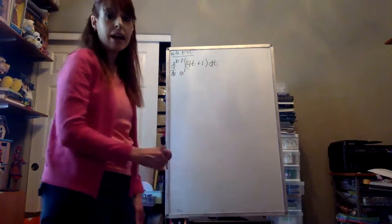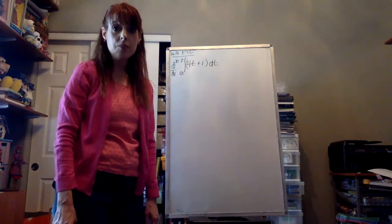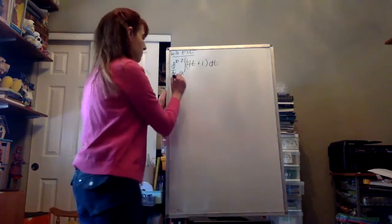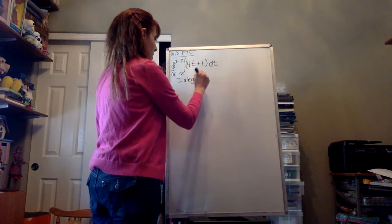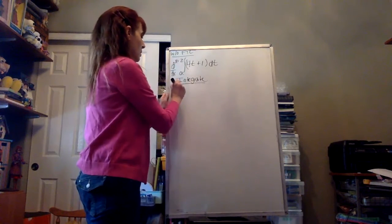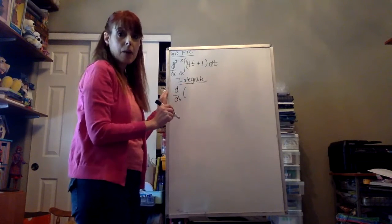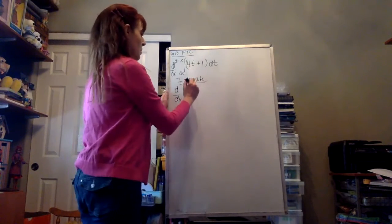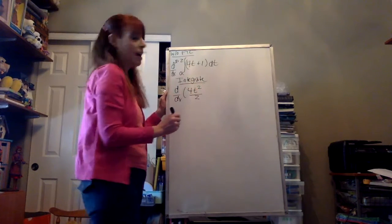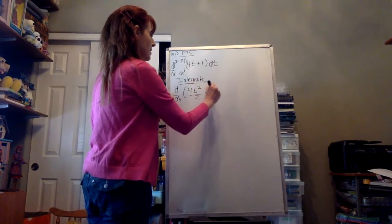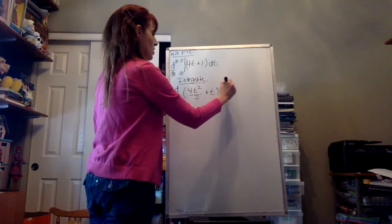So the first step, if we don't have the fundamental theorem of calculus, we're going to have to do it step by step. First thing we'll do is integrate. We'll undo the power rule and then simplify. So 4t squared divided by 2 — we increase the exponent by 1 and divide by the same thing — plus t, and that's evaluated from a to x+2.